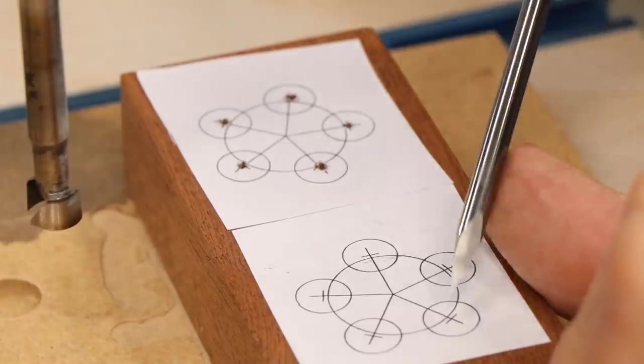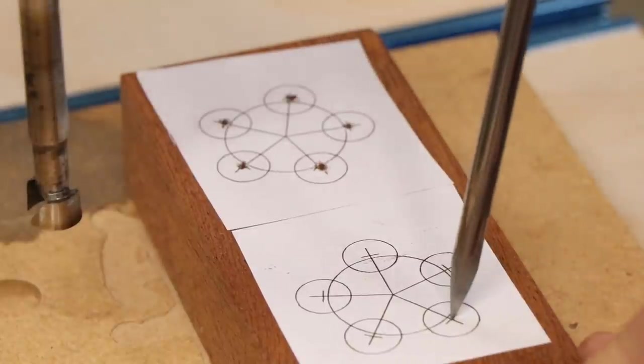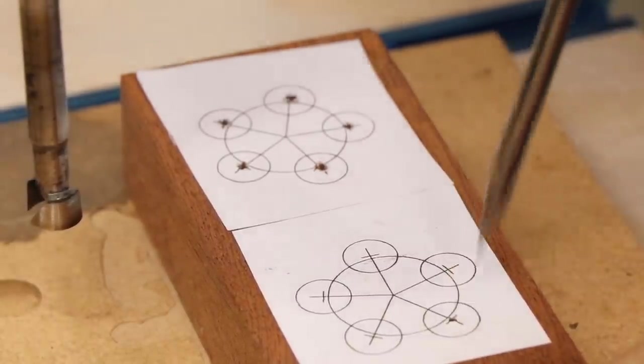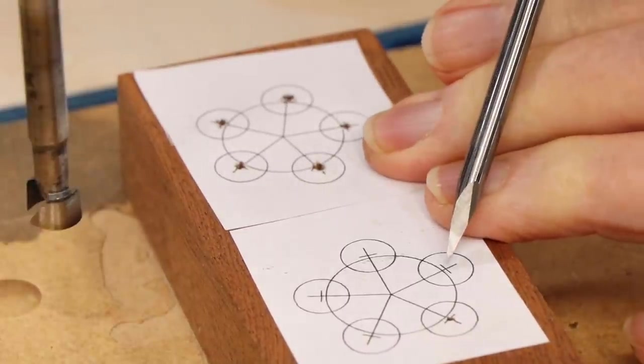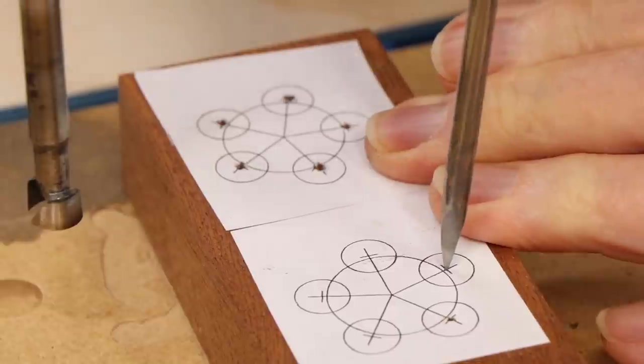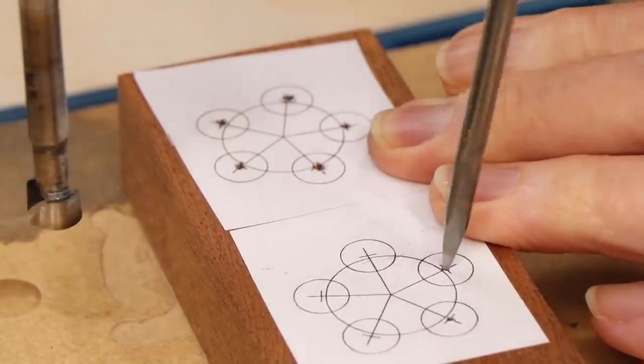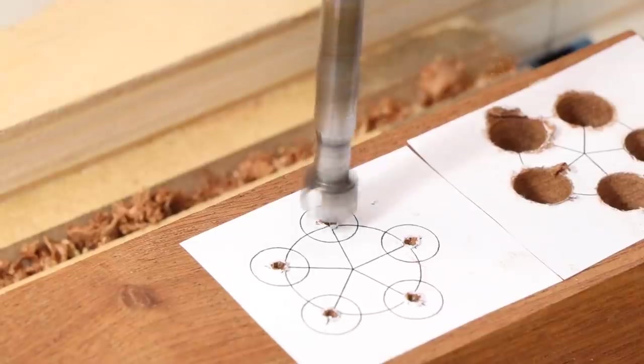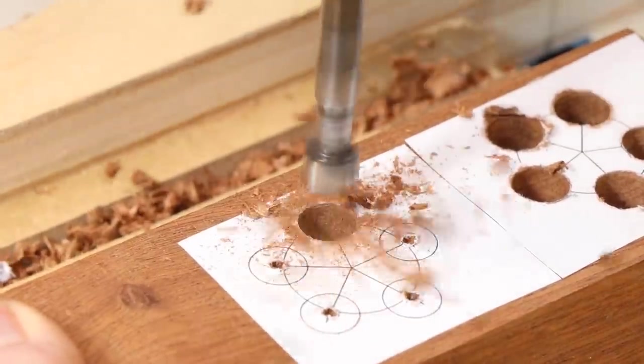I used a birdcage awl to create a starting hole for the Forstner bits I planned to use. If you don't recognize this tool, that may be because I made it specifically for this kind of job out of tungsten carbide, and my grinding of the tip was done freehand. It was cosmetically less than perfect, but it really works like a charm. Drill five holes with a bit that's roughly 3 eighths inch, or 10 millimeters.